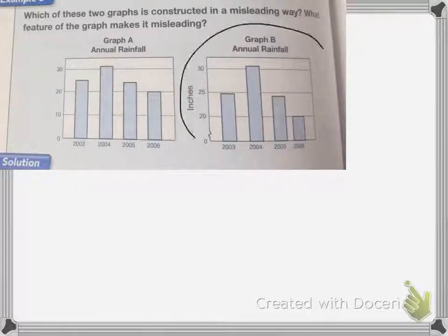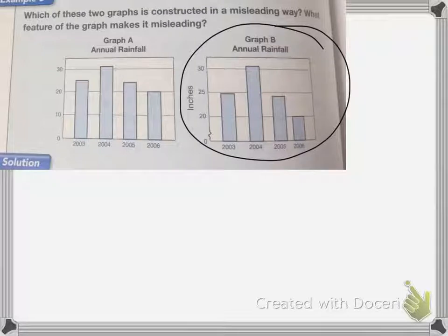But graph B is misleading because the lengths of the bars makes it appear that three times as much rain fell in 2004 than in 2006. And the reason it does that is because we broke the vertical scale, which sometimes helps, but it distorts how tall these lines are.